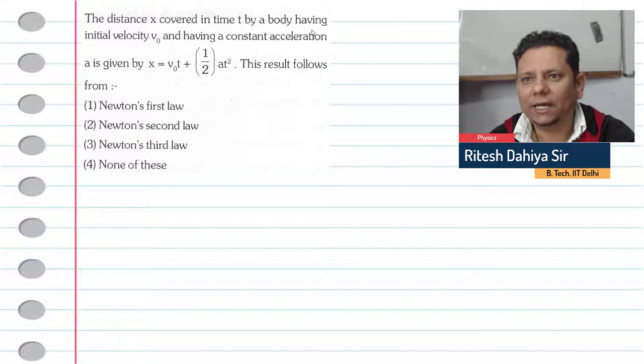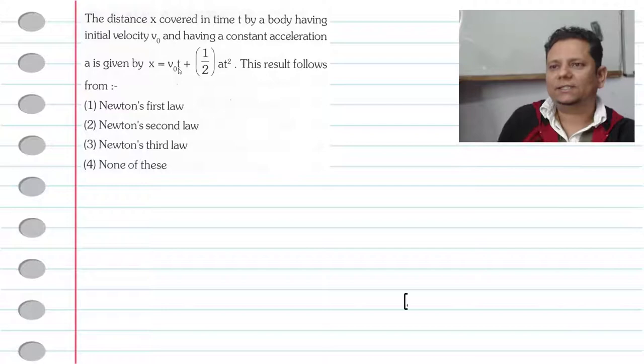Next question. It says the distance covered x in time t by a body having initial velocity v₀ and having a constant acceleration a is given by x = v₀t + (1/2)at².